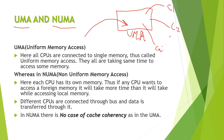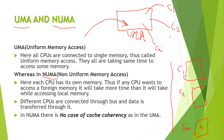In non-uniform memory access (NUMA), each CPU is given its own memory. CPU1 has its own memory, CPU2 has its own memory, and so on — all connected via a memory access bus. Since each CPU accesses only its own memory, there is no need to implement the cache coherency concept that was required in UMA.